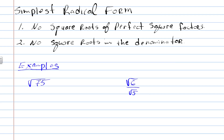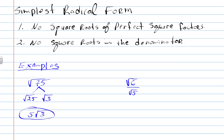This example illustrates condition number 1 — no square roots of perfect square factors. We can't take the square root of 75 directly; it's not a perfect square number. But we can break it down into two factors: the square root of 25 and the square root of 3. The square root of 25 is 5, our perfect square factor. Since we can't take the square root of 3 and it doesn't break down into a perfect square, we write the answer as 5 times the square root of 3.